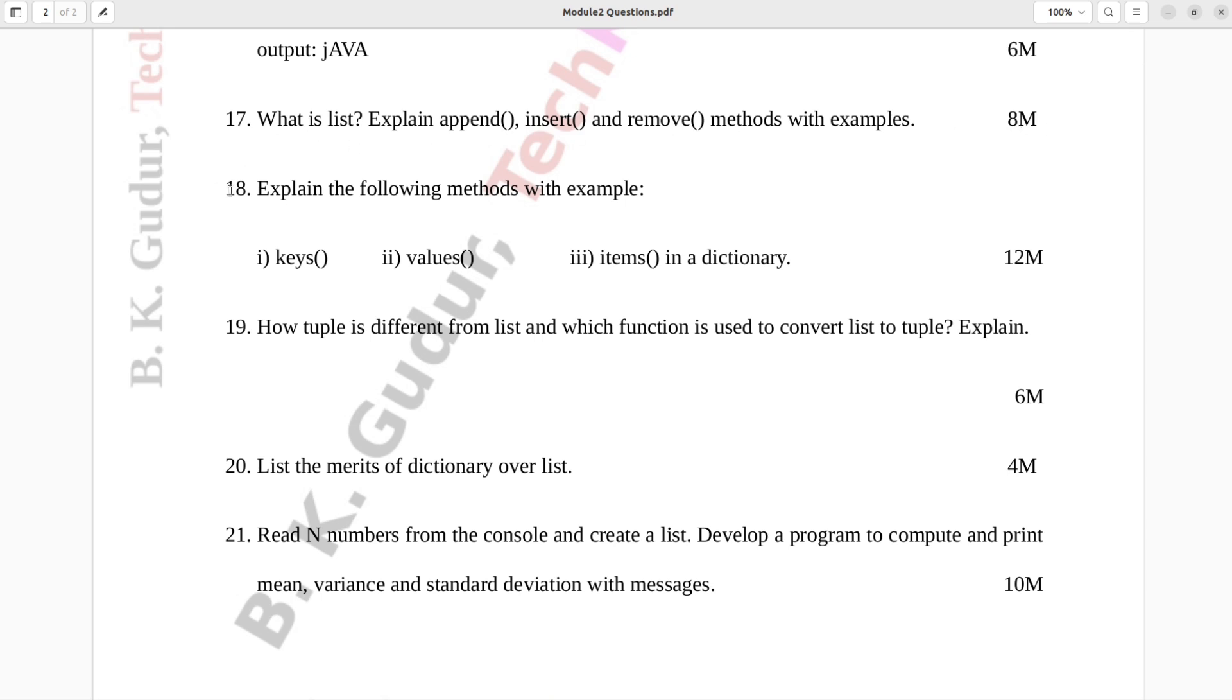Question number 18. Explain the following methods with example. One, keys. Two, values. Three, items in a dictionary. Twelve marks.